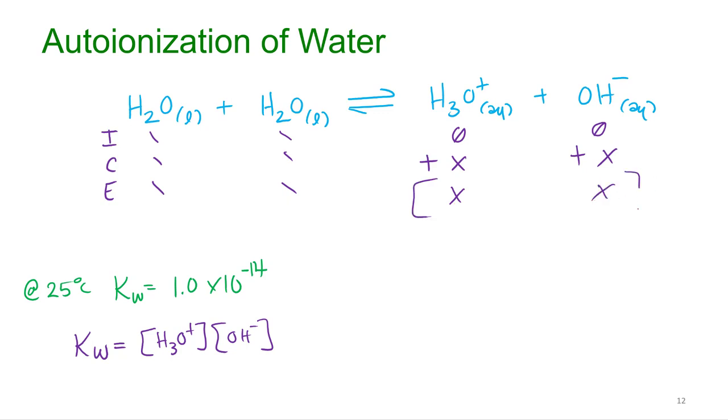What's zero plus x? X. This is my equilibrium line. I'm going to plug those in. I got Kw equals x times x. We'll call that x squared. If I want to solve for x, I'll just take the square root of both sides. Square root of Kw equals the square root of 1.0 times 10 to the negative 14th, which is 1.0 times 10 to the negative seventh.